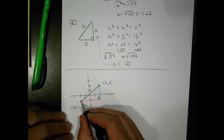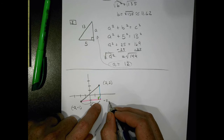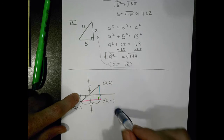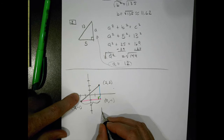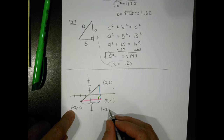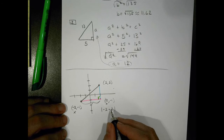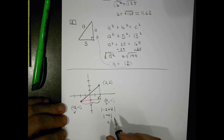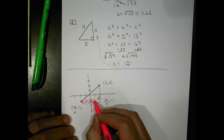To find that length, I first need to find the base. The base goes from negative 2 to positive 2 along the x-axis. The absolute value of negative 2 minus 2 equals the absolute value of negative 4, which is 4. Or you can just count on the graph: 1, 2, 3, 4 — it's 4 units away.